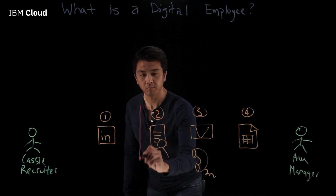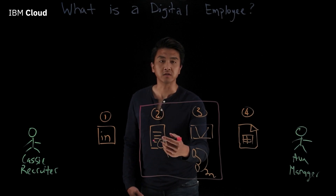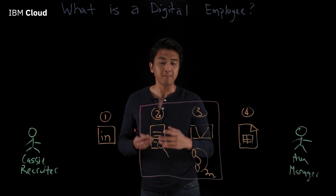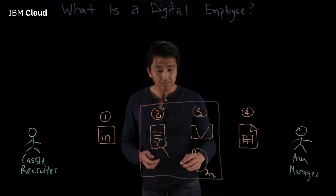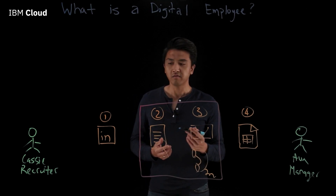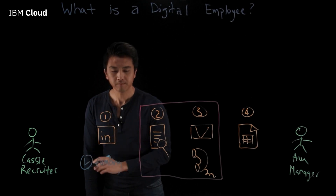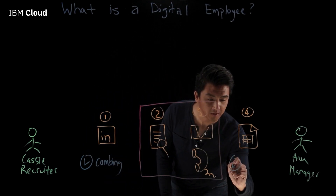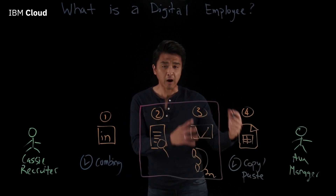Now, Cassie wants to spend more of her time on higher-value work. She also knows that as a recruiter, this is where she can really flex her skills. But instead, she spends most of her day on manual and repetitive tasks — things like combing through a list of candidates in the search results. Later in the process, when she's come up with the shortlisted candidates, she spends a lot of her time copy-pasting information from LinkedIn into the spreadsheet.